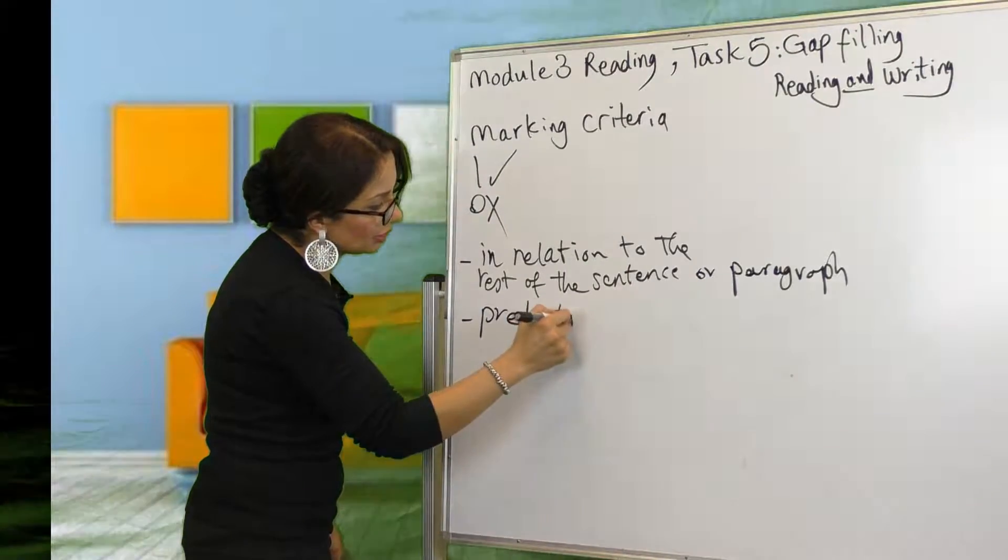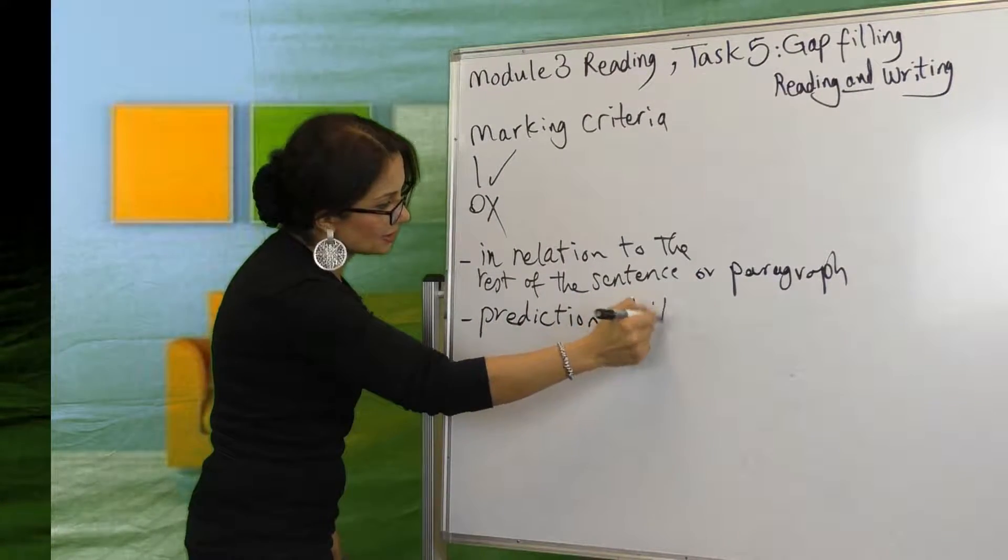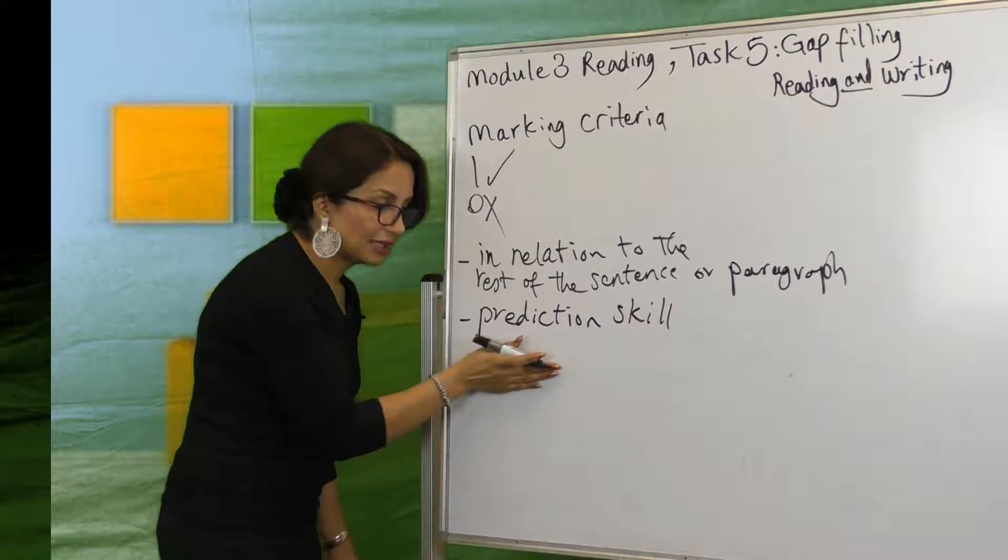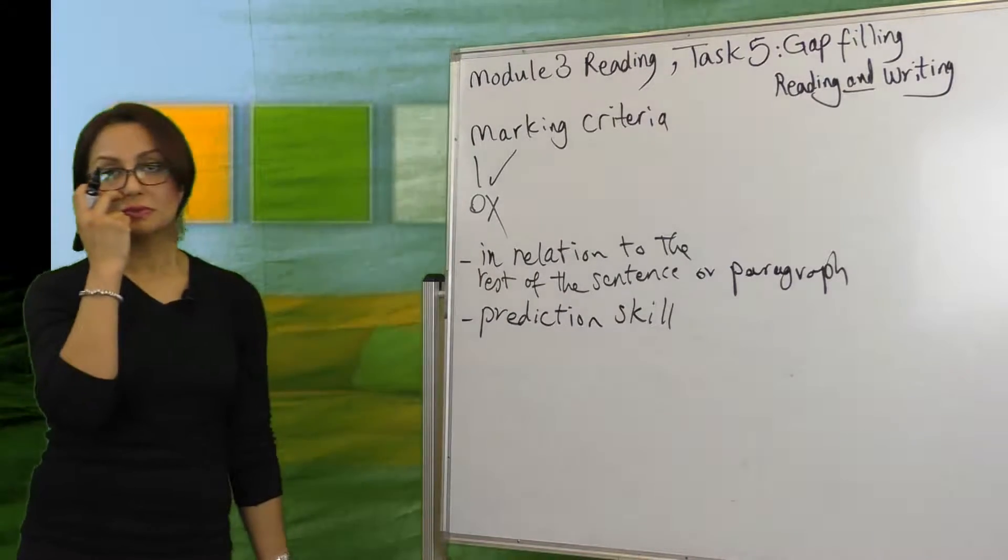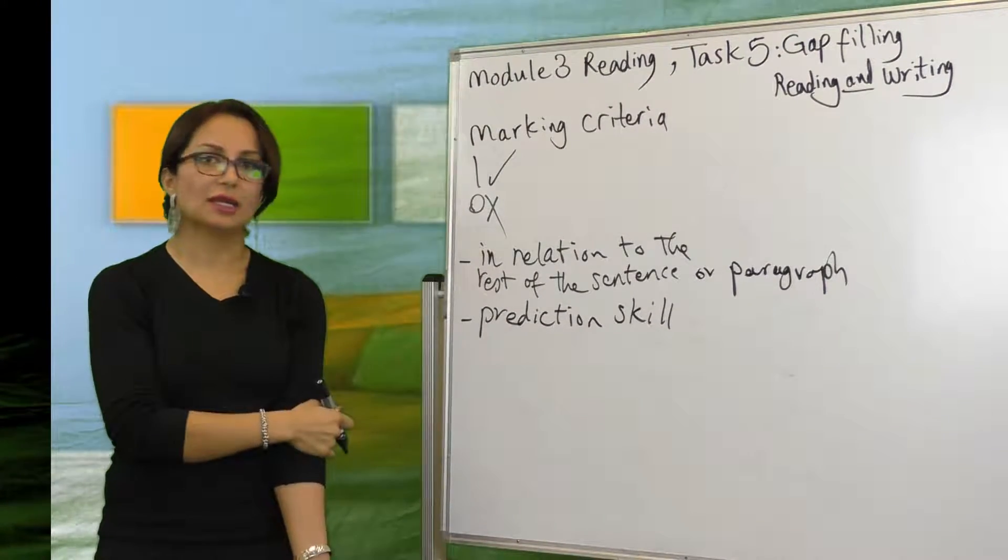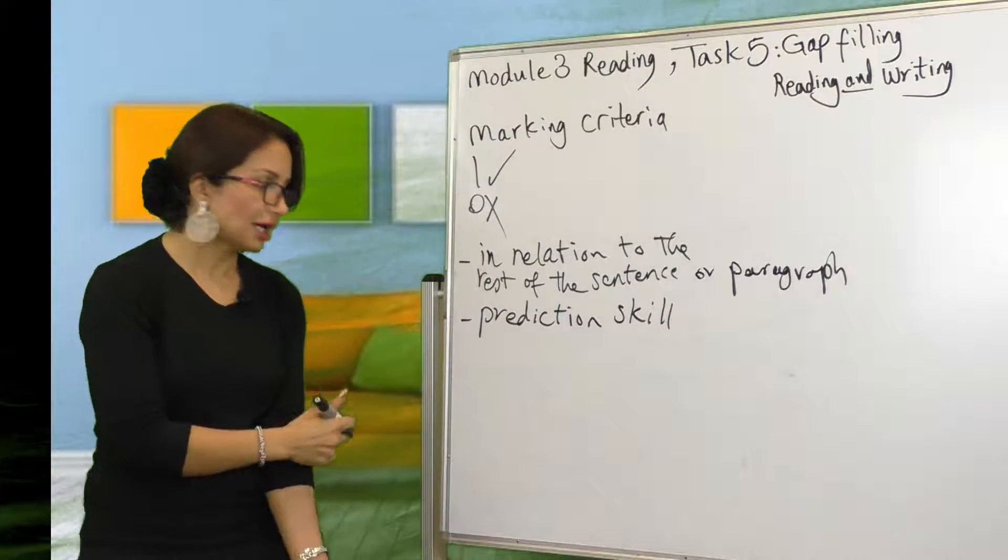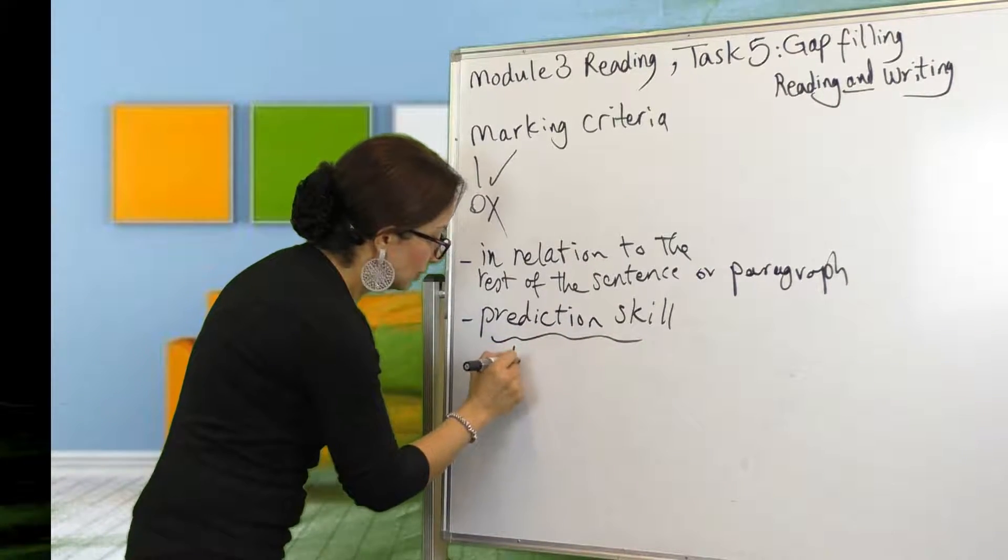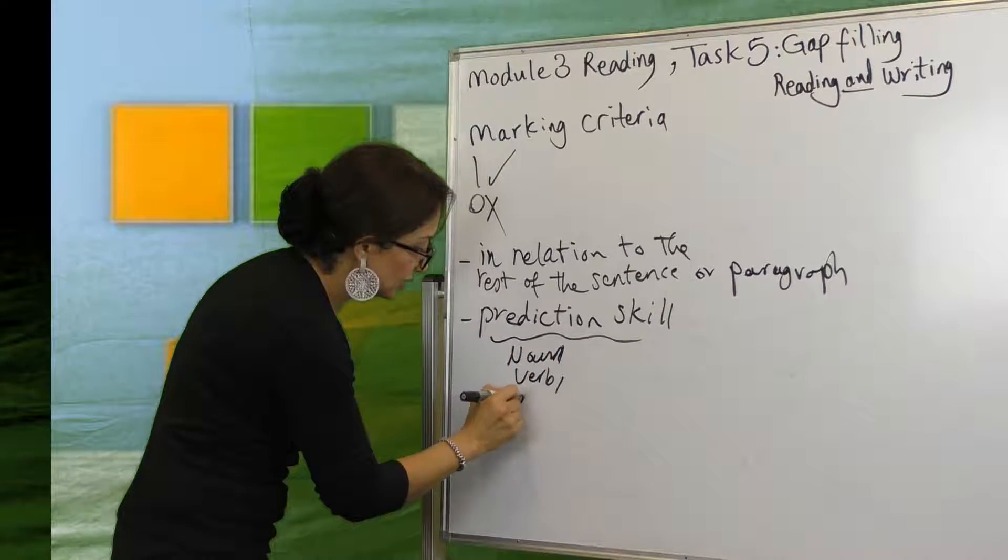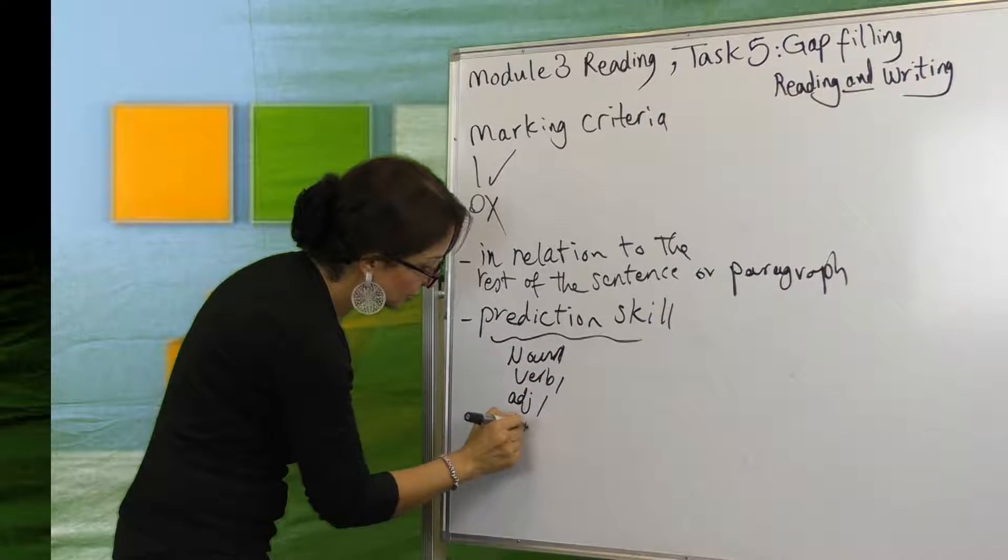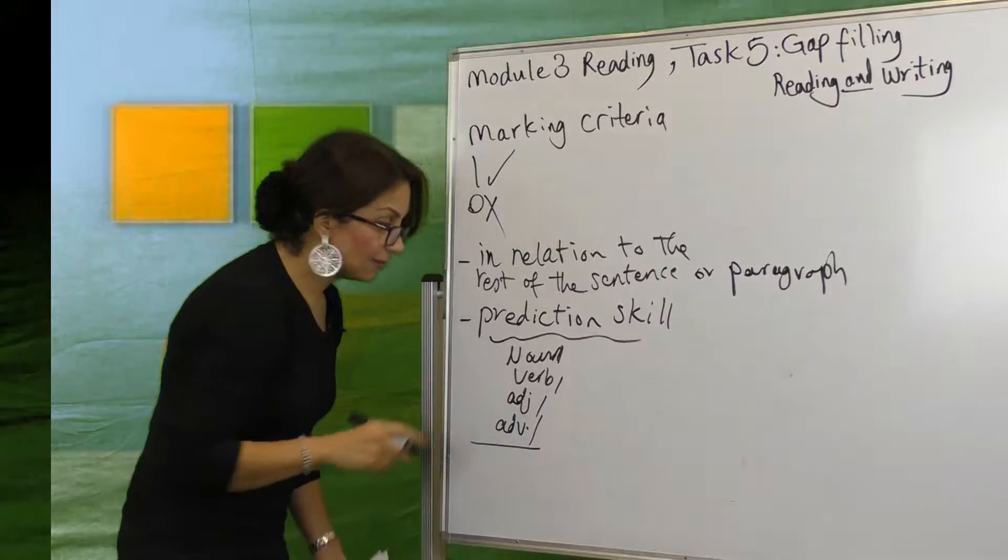Prediction skill is a very important skill in this test. Prediction skill means look at the blank and the words that come before and after the blank, and try to guess the type of word you need to fill. For example, you need noun, you need verb, you need adjective, you need adverb.